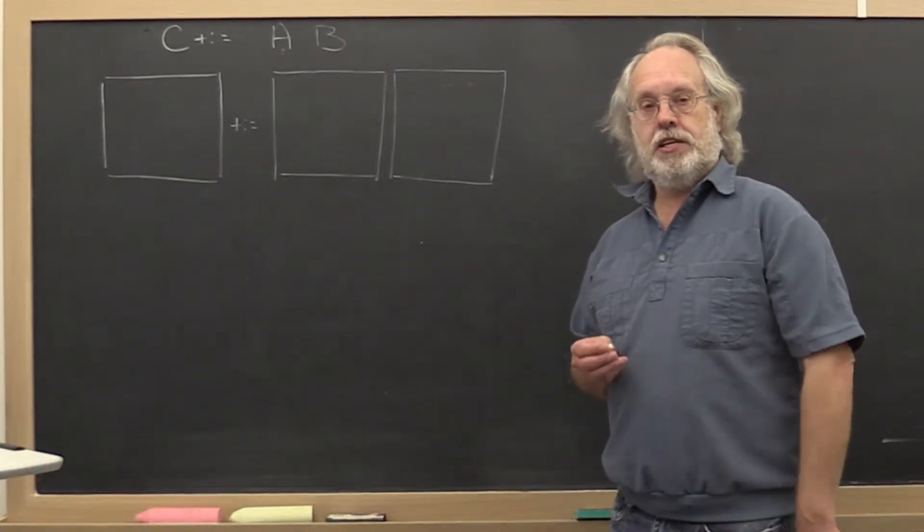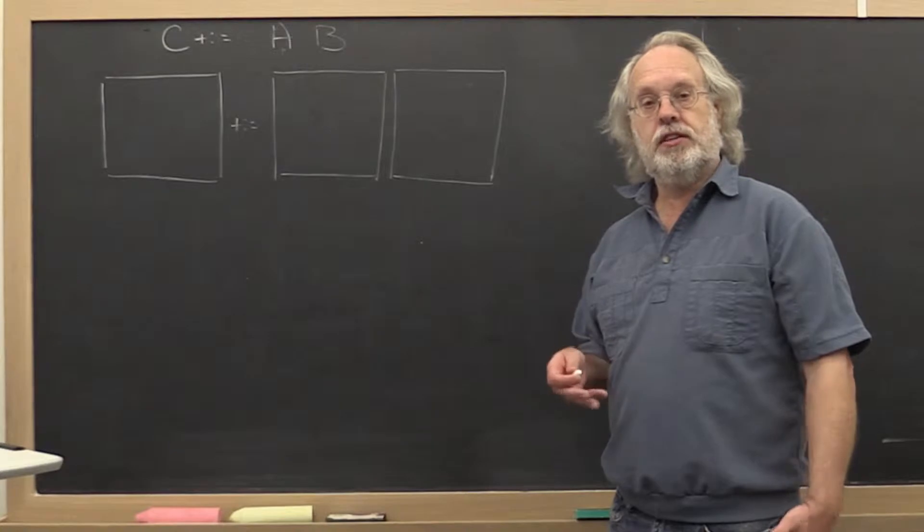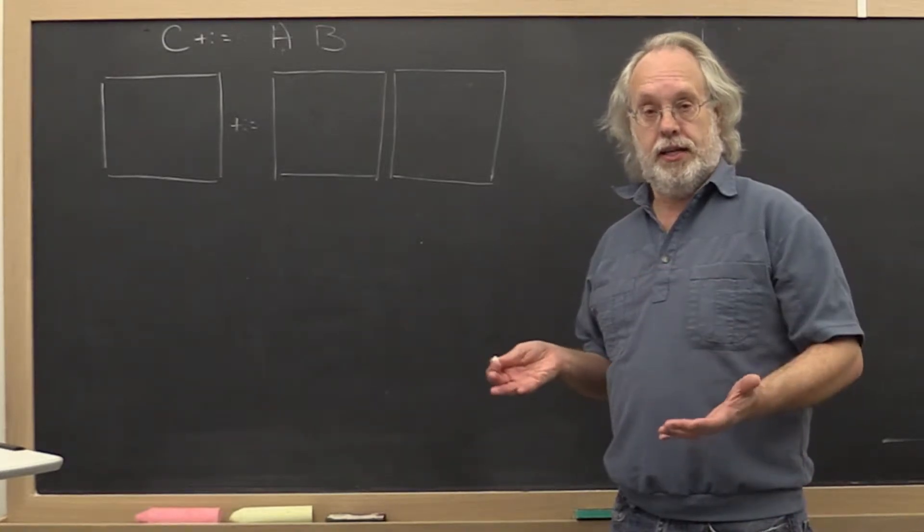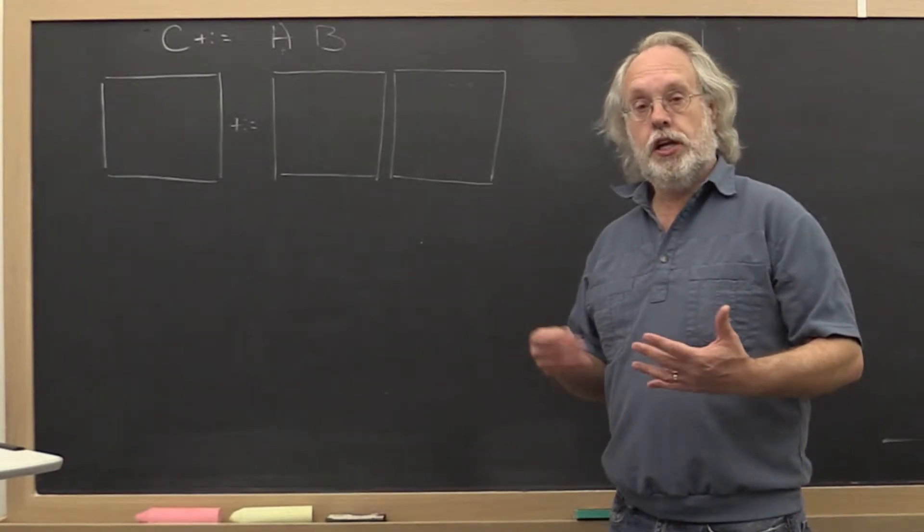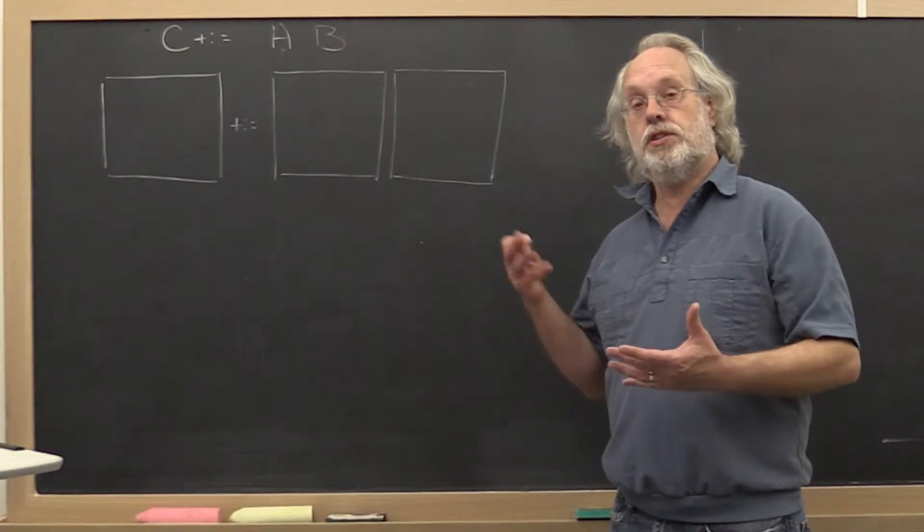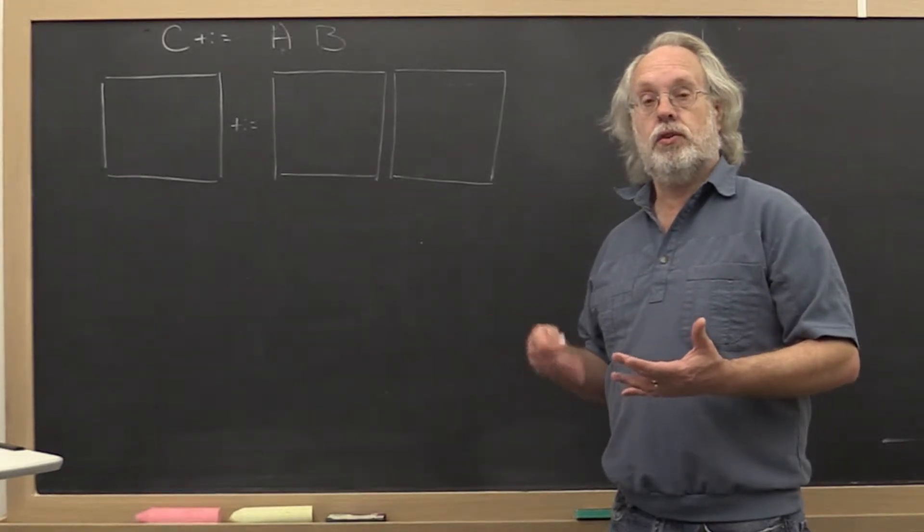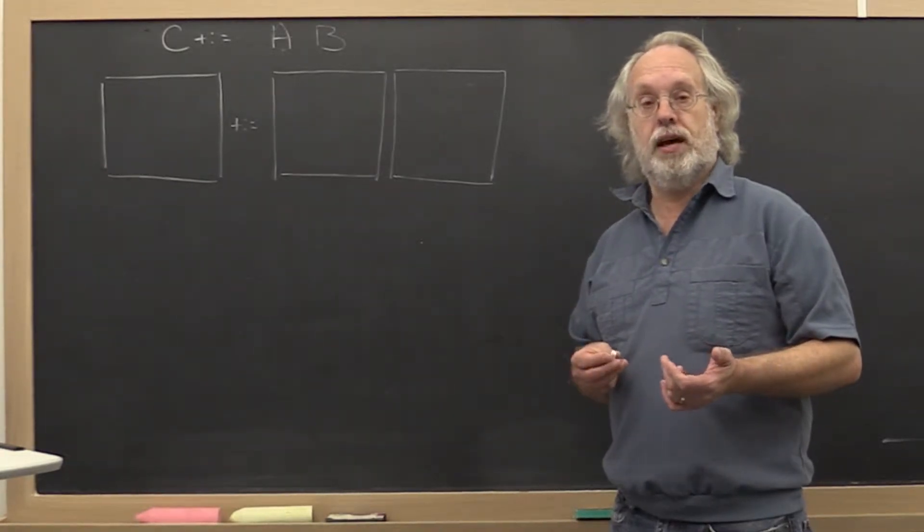So optimizing matrix-matrix multiplication turns out to be all about blocking the data. Let's learn a little bit about how, when you partition the matrix, how then the corresponding matrix-matrix multiply works.